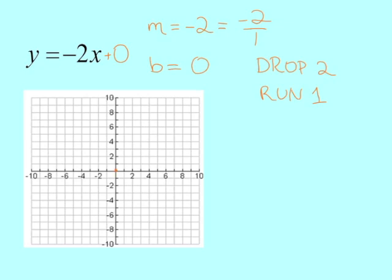So I'll put my y-intercept at 0, which is actually the origin, drop 2 down, and 1 to the right, which gives you a nice negative slope. You can see it's really nice and steep, because the value 2 is a pretty high number. And it's negative, which means it's going to slope down and to the right.